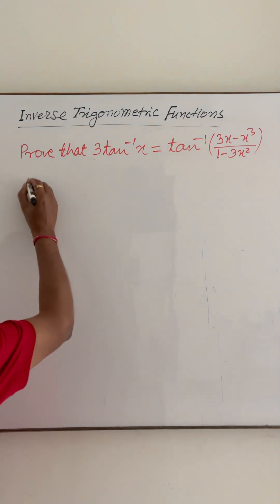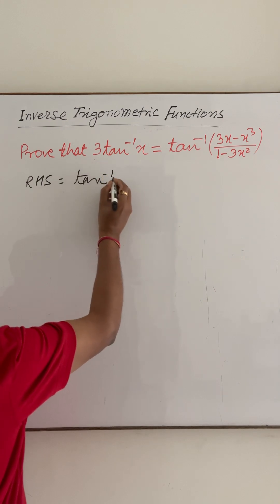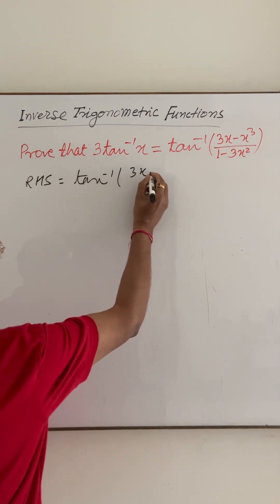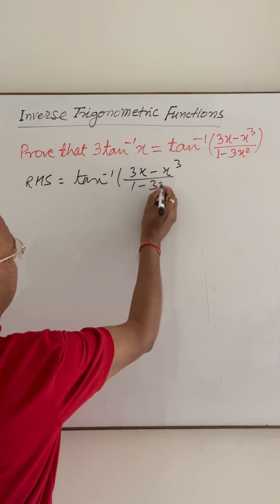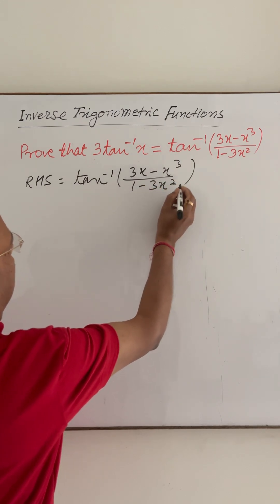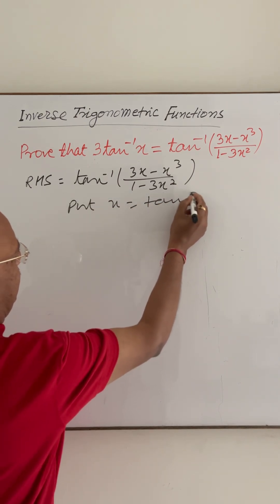So here right-hand side is tan inverse of 3x minus x cube upon 1 minus 3x square. Here we will put x is equal to tan theta.